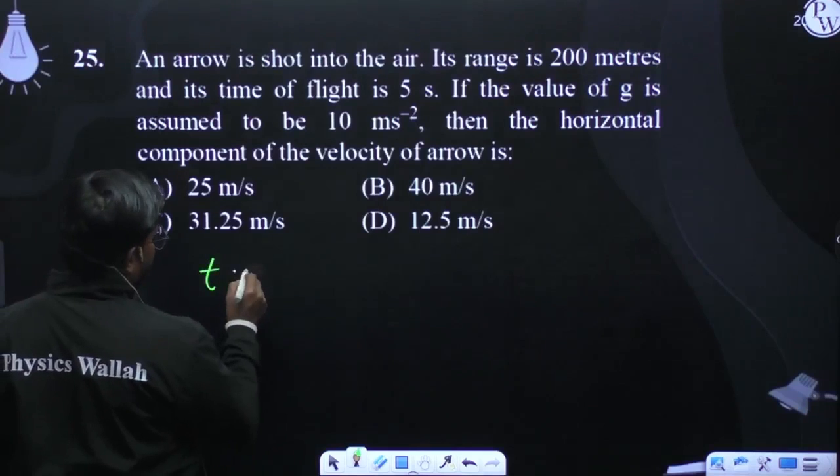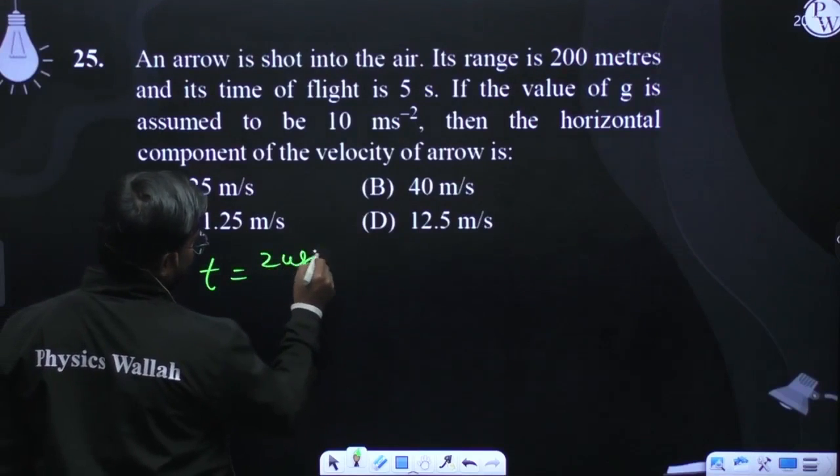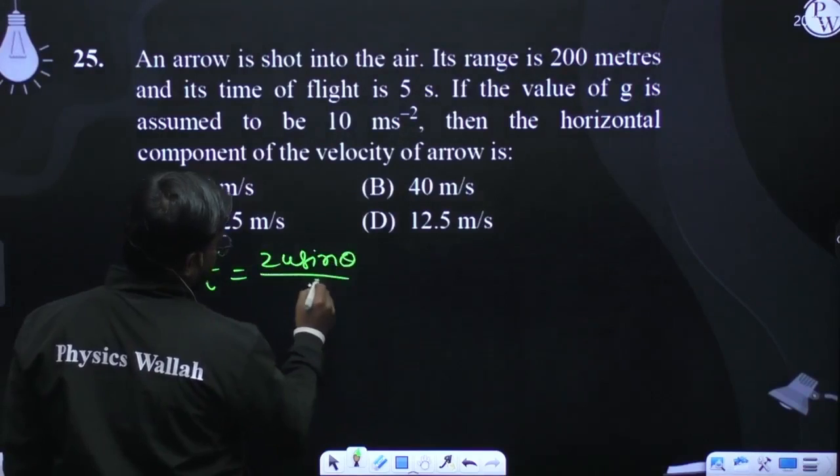Time of flight: 2u sin theta by g. This is 5.